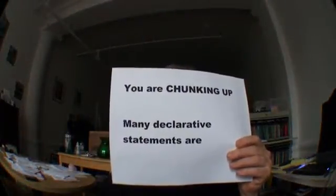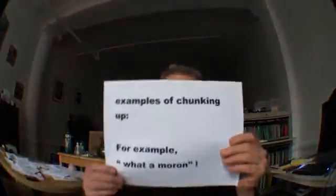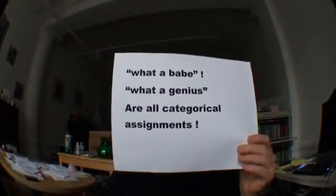As we're doing that, we're chunking up. When you're making any kind of mental declarative statement, you're chunking up. For example, if you say someone's a moron, or what a babe, or what a genius — these are all categorical assignments. The mind has essentially asked itself, what is this an example of? and placed it into a category. We can do this much more deliberately and use it in a sequence of thinking to dynamically alter the landscape.